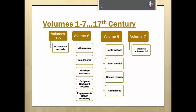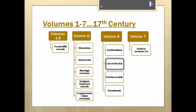Volume 6 also includes acts performed by the Jesuits in their travels into the wilderness, marriage contracts, immigration records such as those concerning the Carignan Regiment, engagements — records generated by those whose services were engaged and came to Canada by way of a labor contract — confirmation lists, sick lists, census records, and annulments. There is also a Quebec sick list in Volume 3 and mission records in Volume 5.